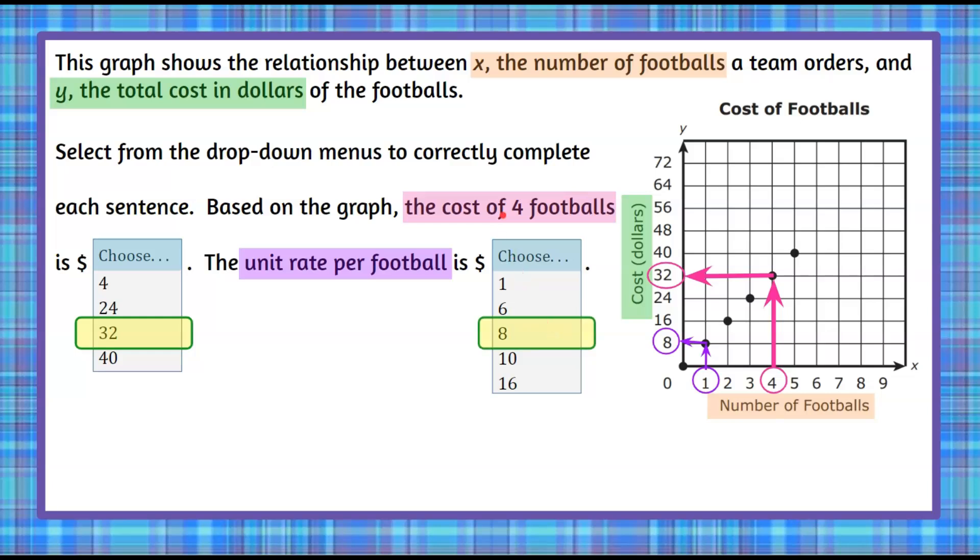So the cost to buy four footballs is $32 and the unit rate per football is $8. And does our answer make sense? Yes, because if one football costs $8, then four times eight is 32.